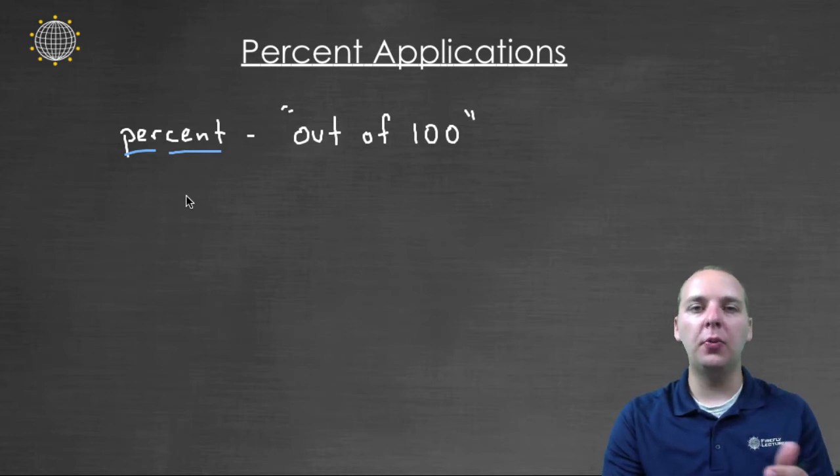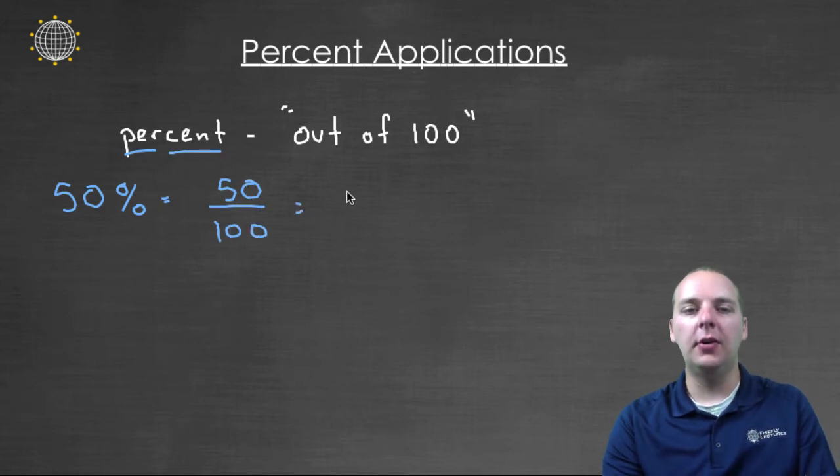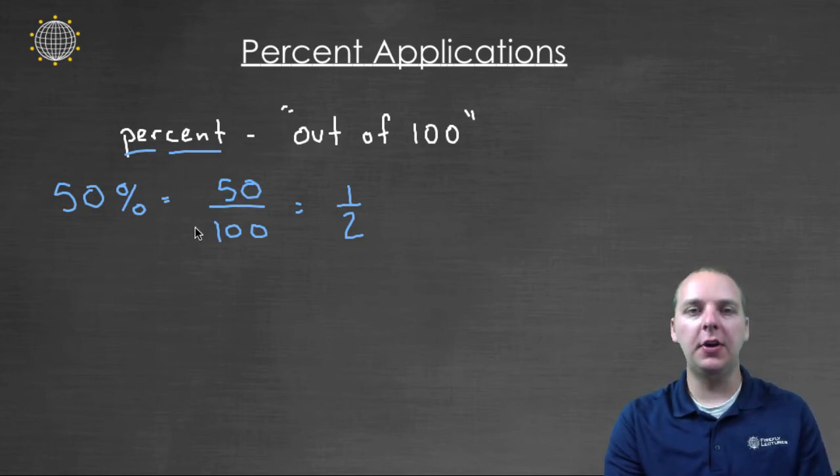And so when you see per cent, what we really mean is per one hundred. A simple example would be fifty percent would be equivalent to fifty out of one hundred. Fifty out of one hundred, the fraction reduces to a half. And that's something that's very intuitive. If you had a pizza and you ate fifty percent of the pizza, you would have eaten half of the pizza.